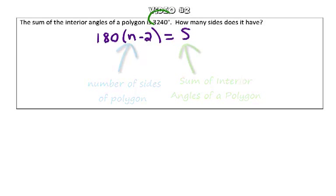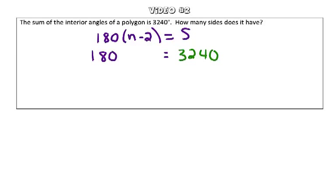We know that this sum is 3,240 degrees, so we can substitute that into the formula. What we're trying to solve for is the number of sides, so that equals 180 times n minus 2.